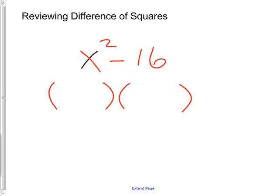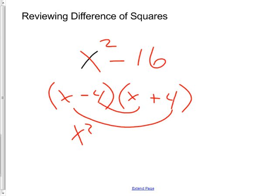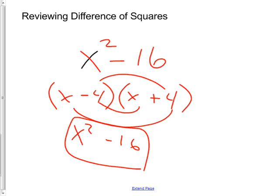What did you get? Good. If you had to prove that you were right, how could you prove it? You'd foil it. You'd do x times x and make x squared, and then the outside and the inside would make nothing, right? And then the last would make negative 16. I got the same thing I wanted. You can always check to see if you're right on factoring — that's one of the cool parts.